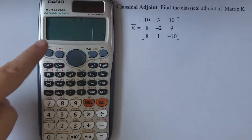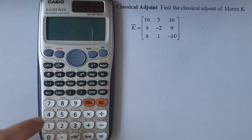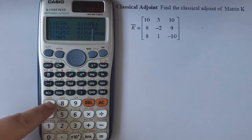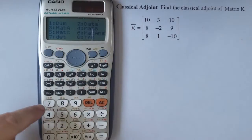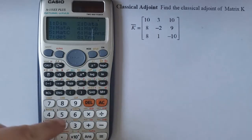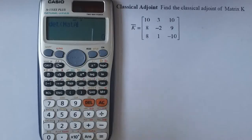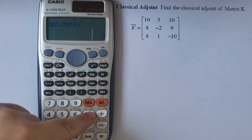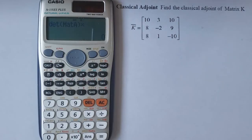I'm pressing shift and then 4 here. You see matrix above the 4 key and then I choose 7, 7 for determinant. Shift again, matrix 3 for matrix A. Close, and then multiply by the inverse of the same matrix.